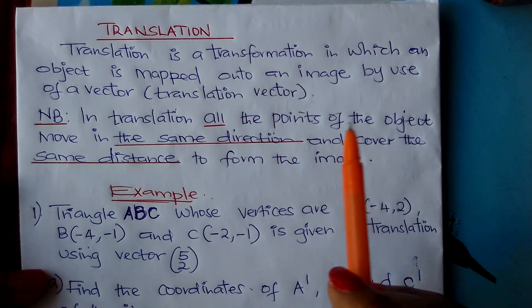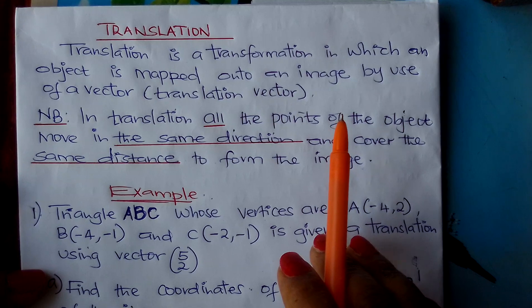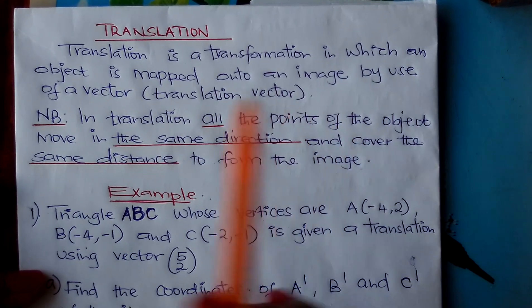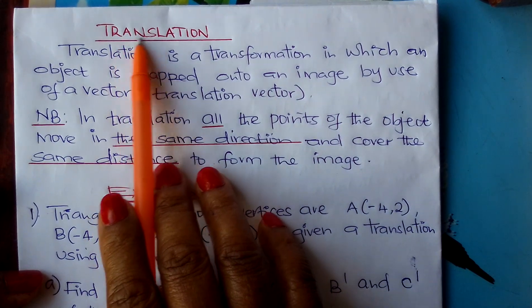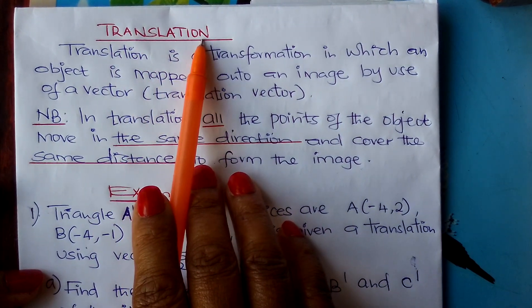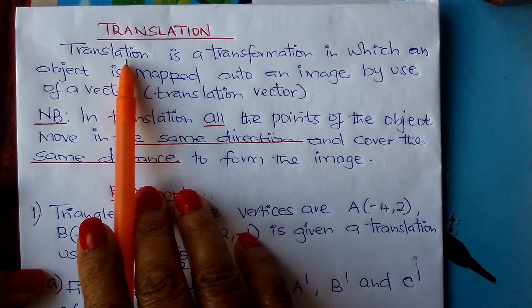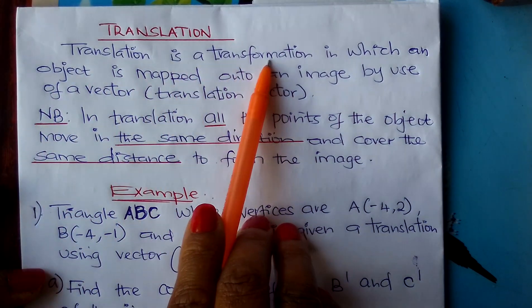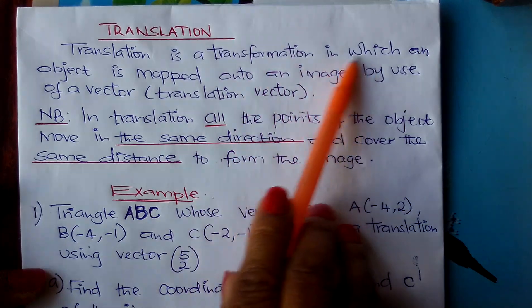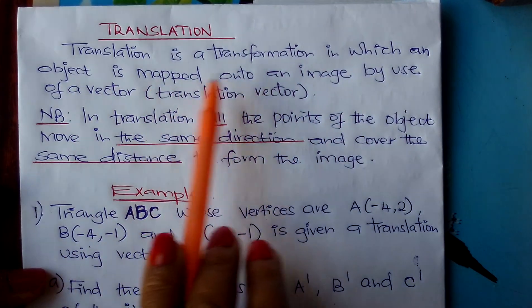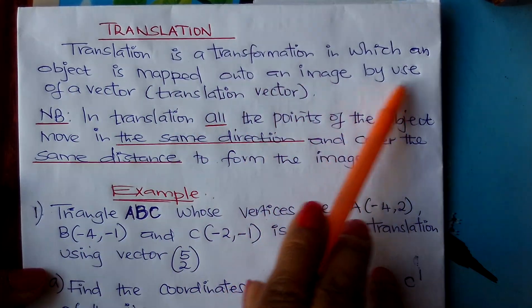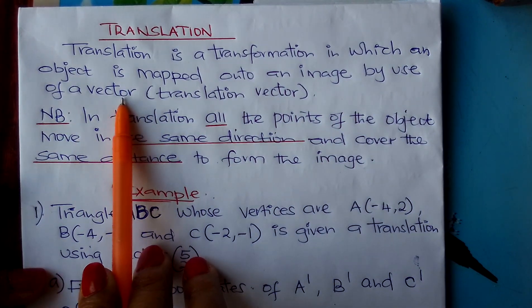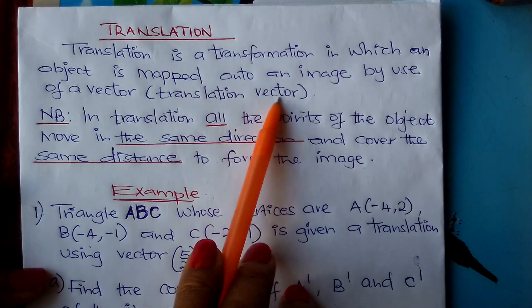Welcome learners to Form 2 Mathematics. We are looking at the topic Vectors 1 and the sub-topic is Translation. Translation is a transformation in which an object is mapped onto an image by use of a vector. This vector is called a translation vector.